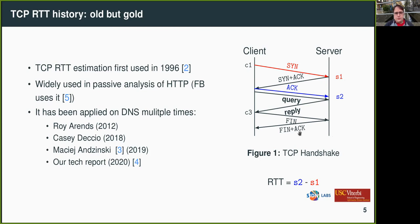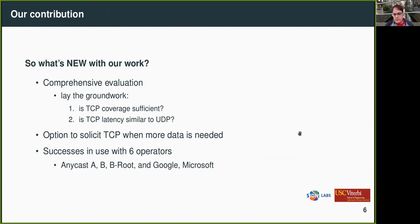This has been heavily used in analysis of HTTP traffic and has been proposed multiple times for DNS. So what is really our contribution? We did a comprehensive evaluation — we laid the groundwork to determine if TCP coverage is enough to represent your clients in production traffic. We statistically compare the latency of UDP and TCP traffic over DNS. We also instrument a DNS server to extract more data from ASes or resolvers of interest, forcing them to send TCP queries. And we document successes with six operators, including two large cloud providers.